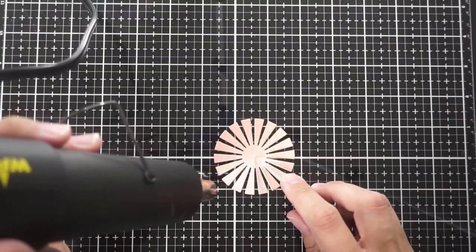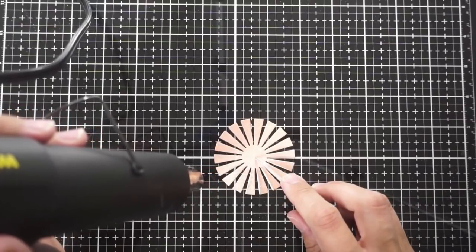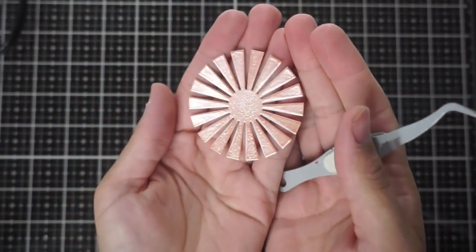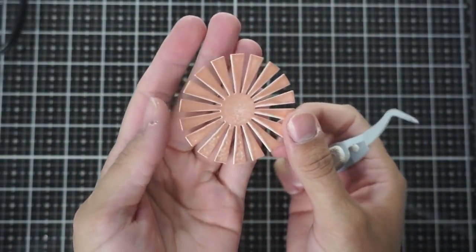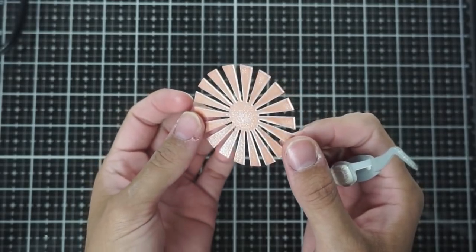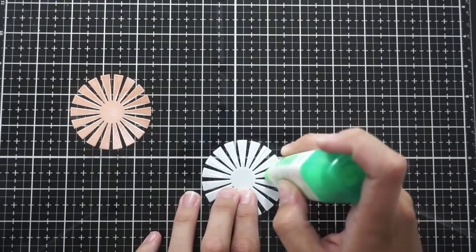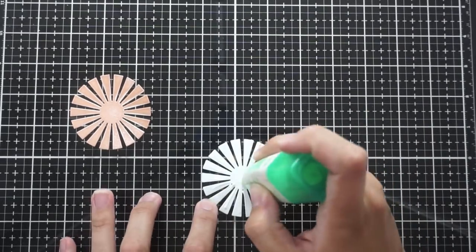So I'm going ahead and heat setting that embossing powder and it just comes out to be this really cool shiny almost like satiny look. It's not sparkly but it is really cool and I think that it will look really good with the Aladdin embossing powder that is super sparkly.